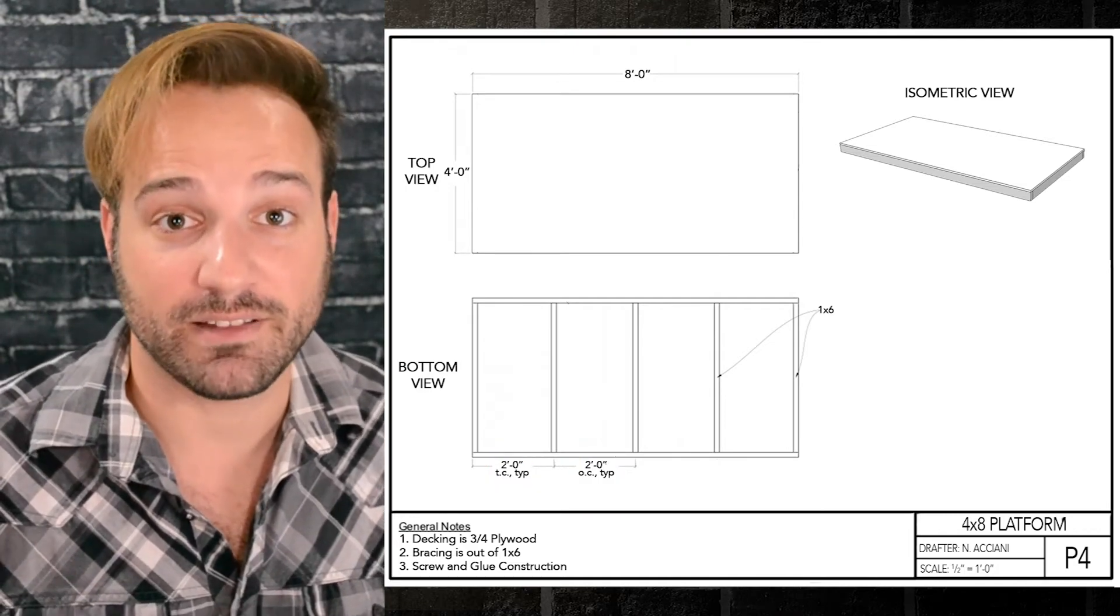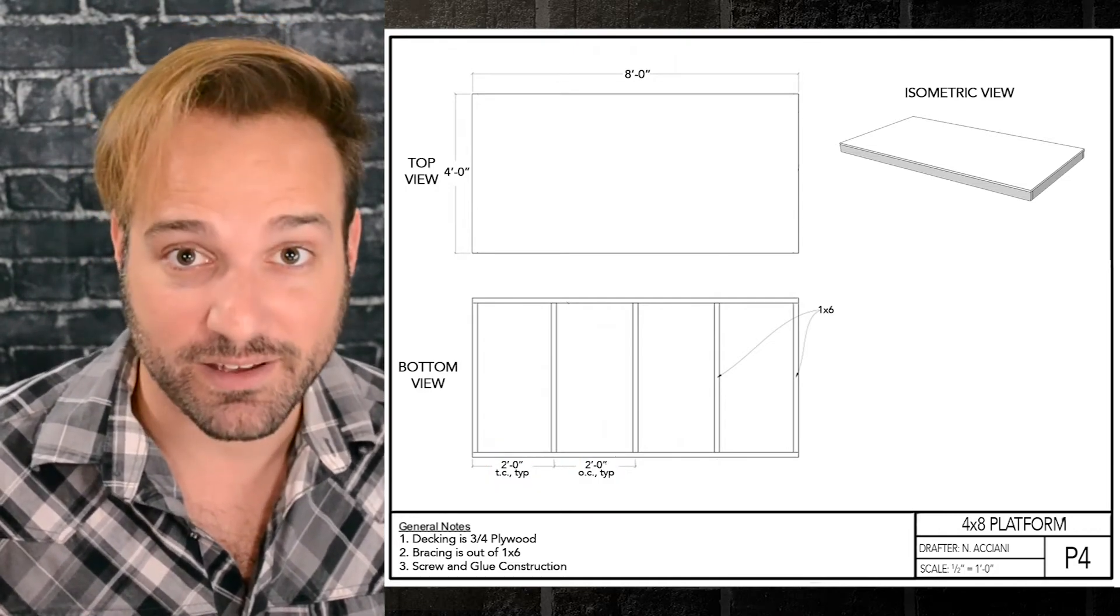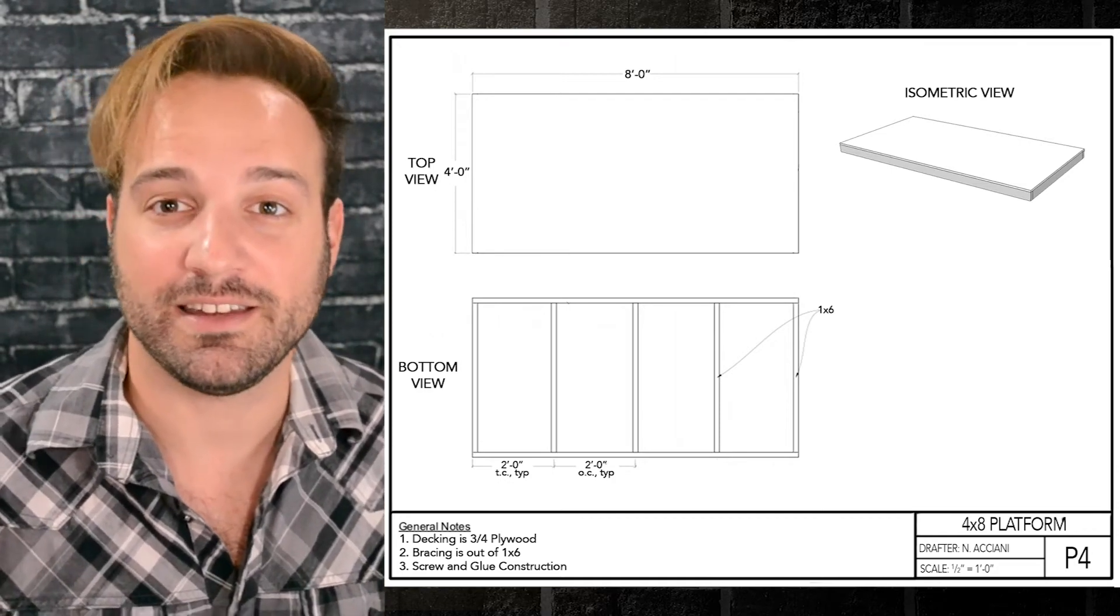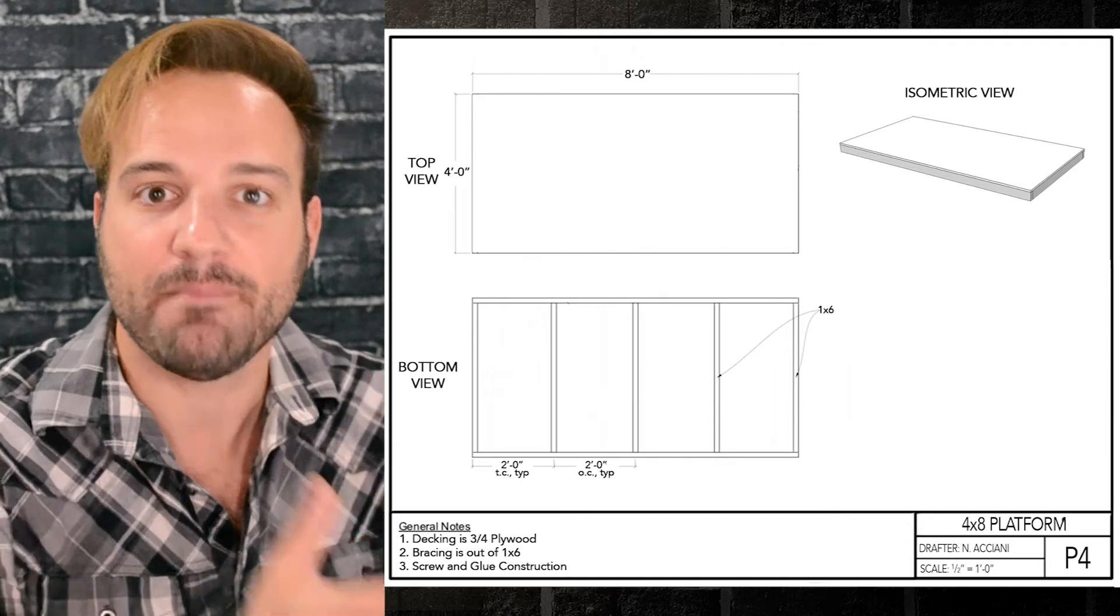Except instead of having like eight pages to tell you how to make a box, this is one page and it's not broken down step by step because we don't necessarily need it because we have the layout. We have the map of how to build this. That's what these build plans are. They're just a map on how to build a piece.